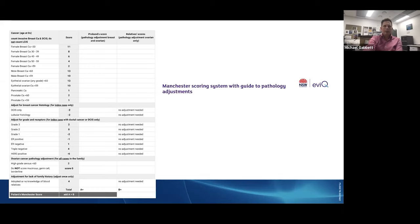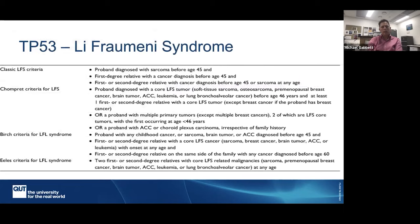Now when your patients come back and say they don't qualify for testing, that's why — that 10% magical cutoff score. There are other conditions that do have breast cancer as a feature, which is another reason why you might want to refer to a genetic service — particularly if you're dealing with unusual cancers in a family that you can't fit into a recognized syndrome. One condition I'll talk about is Li-Fraumeni syndrome, which is serious.